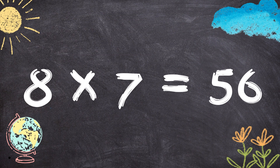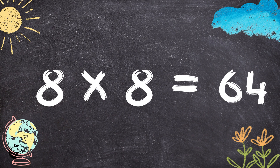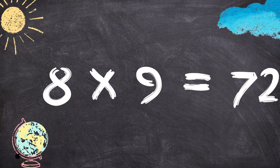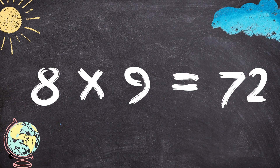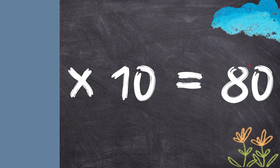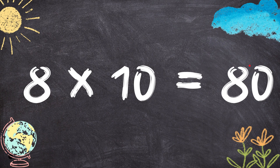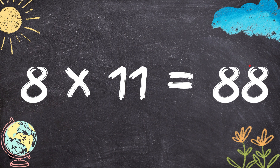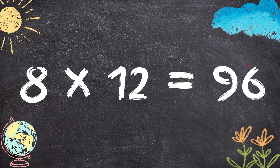8 x 7 equals to 56, 8 x 8 equals to 64, 8 x 9 equals to 72, 8 x 10 equals to 80, 8 x 11 equals to 88, 8 x 12 equals to 96.